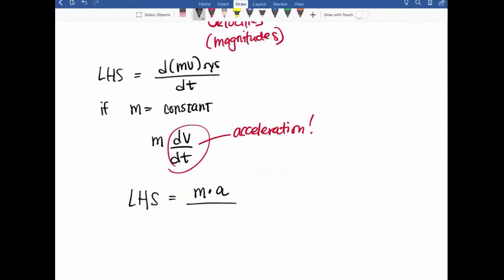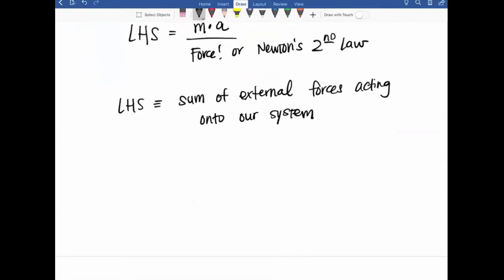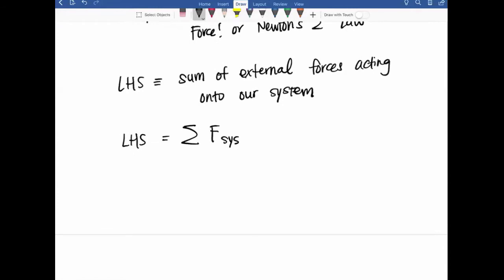What is mass multiplied by acceleration? Force. Exactly. This is force or Newton's second law. So the left-hand side of our equation is the sum of external forces acting onto our system. The left-hand side of the equation is the sum of forces onto the system. We can have four external sources to consider for the sum of the forces onto the system.